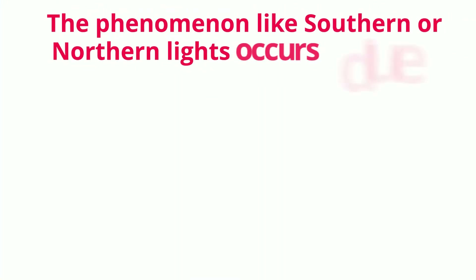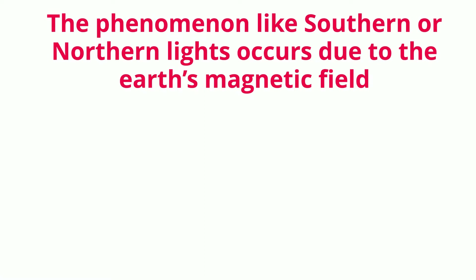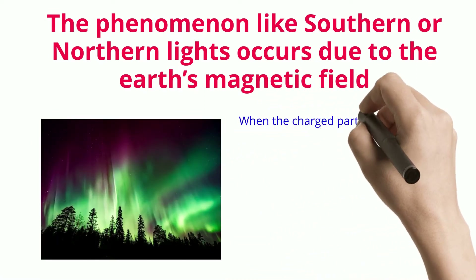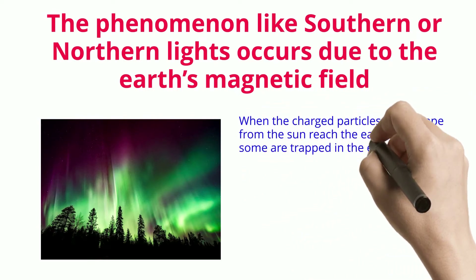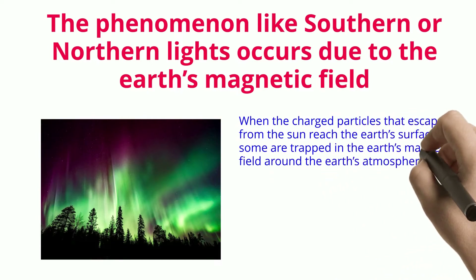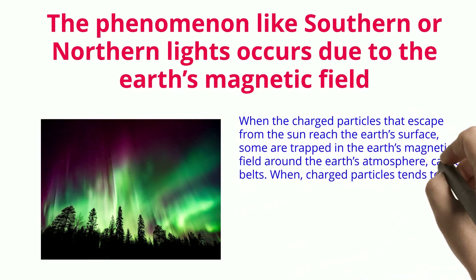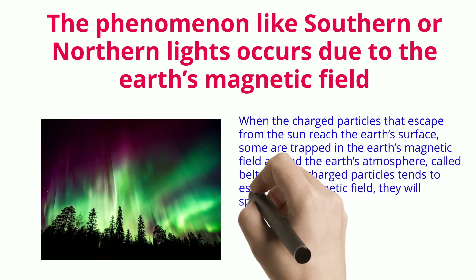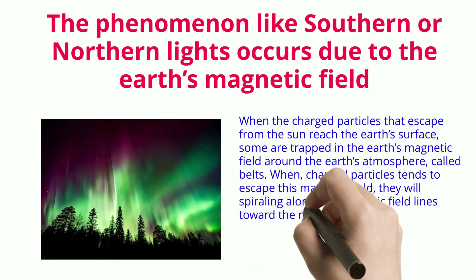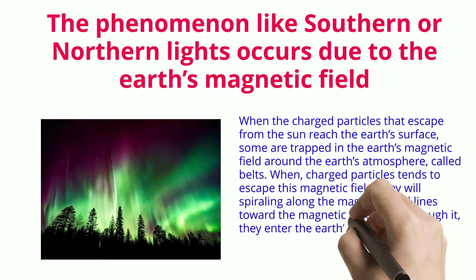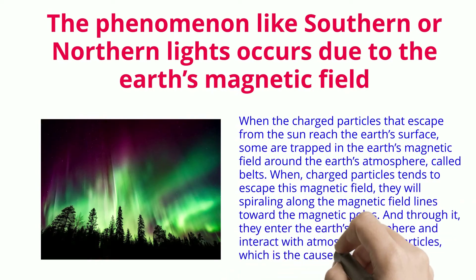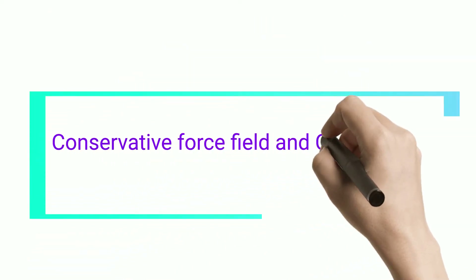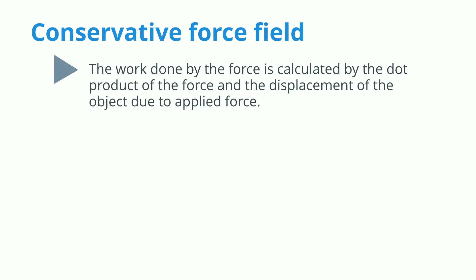Phenomena like the southern or northern lights occur due to Earth's magnetic field. Charged particles that escape from the sun reach Earth's surface; some are trapped in Earth's magnetic field in belts around the atmosphere. When charged particles tend to escape this magnetic field, they spiral along the magnetic field lines toward the magnetic poles, enter Earth's atmosphere, and interact with atmospheric gas particles, causing the beautiful light shows known as auroras.